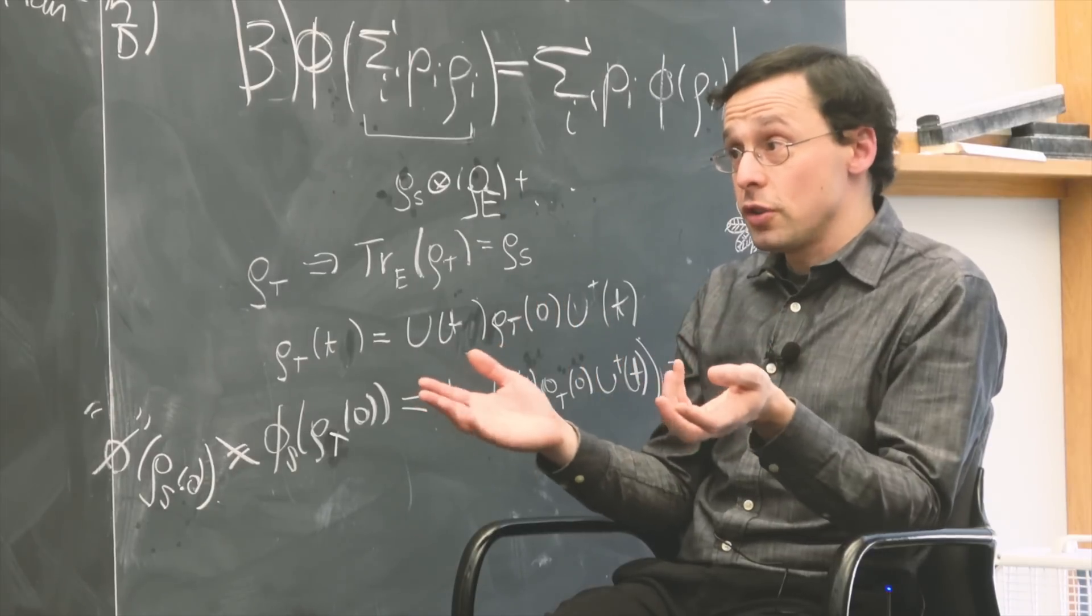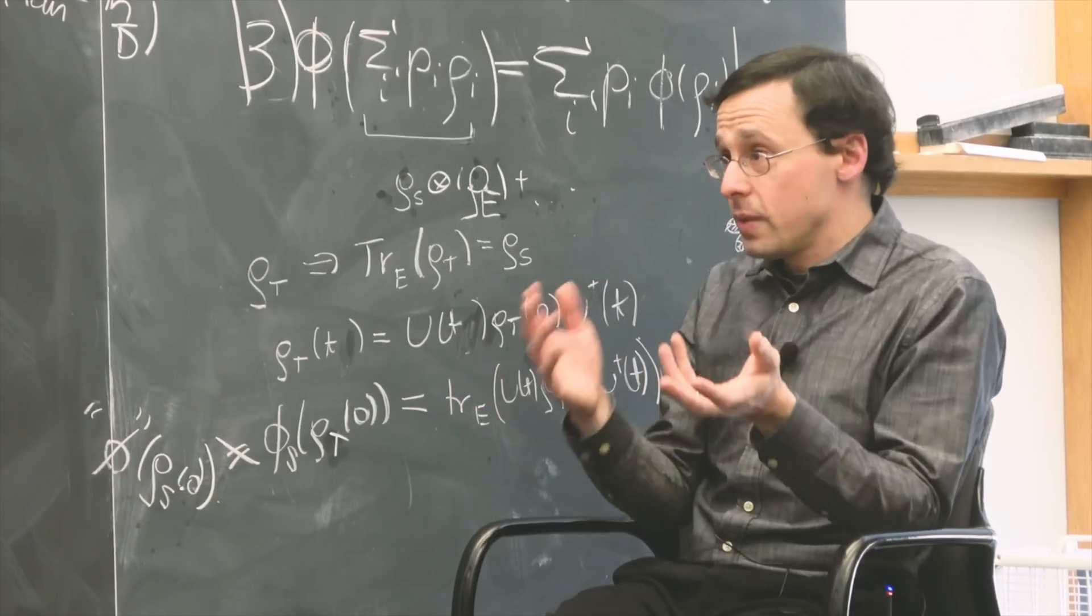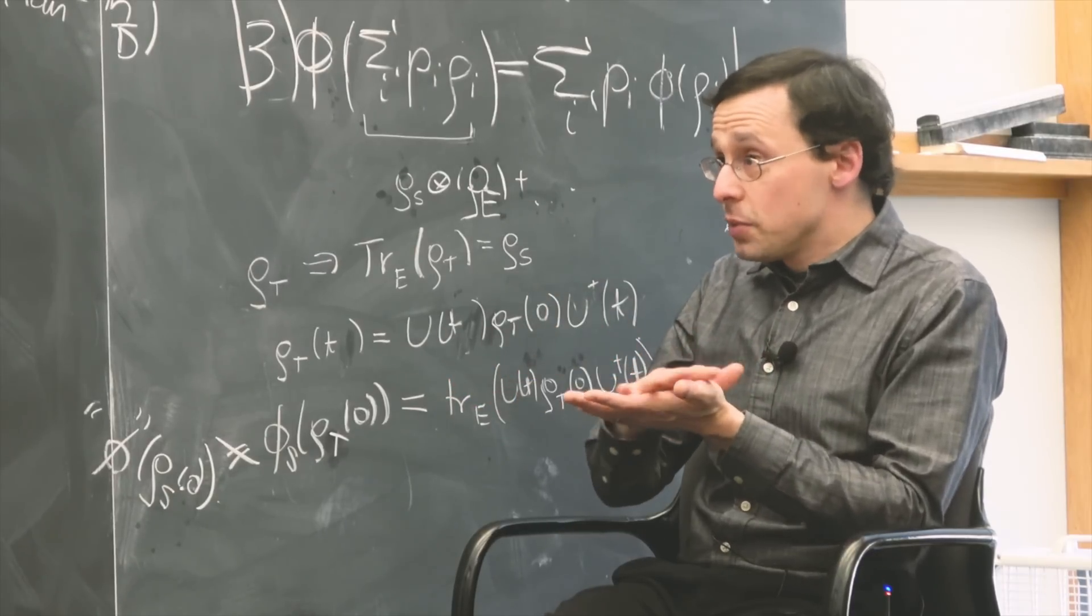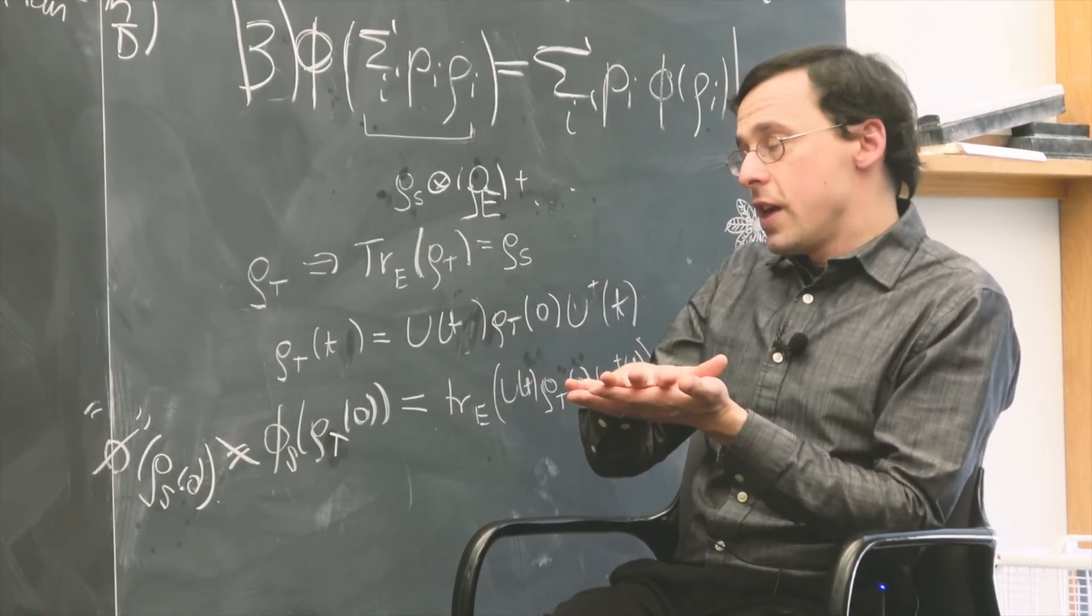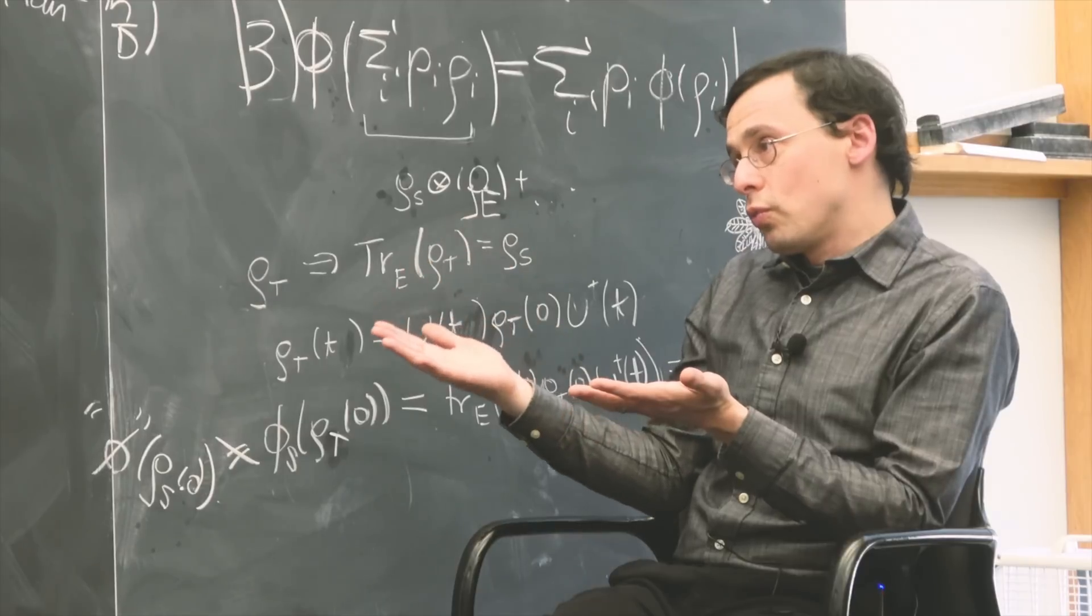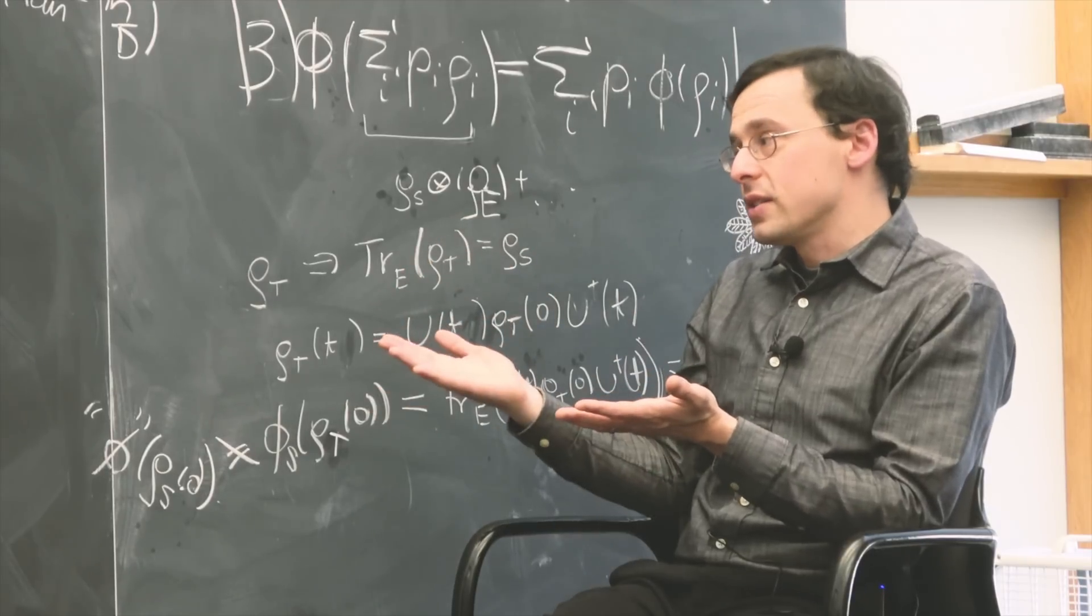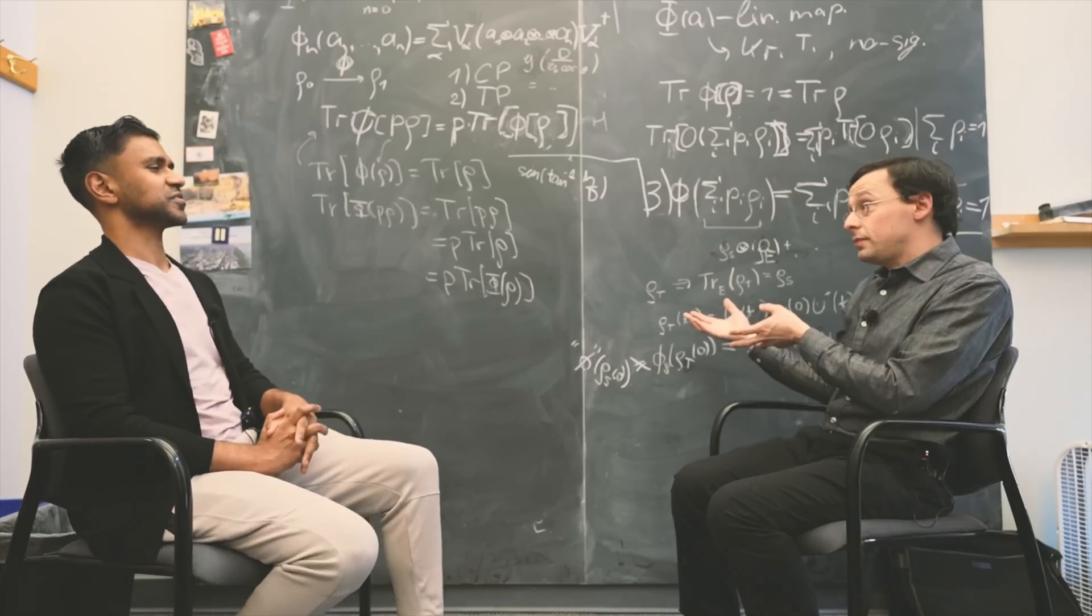could be a system of particles, could be a system of fields, whatever we're trying to model, and if it has indivisible stochastic laws, then through this mathematical representation, this correspondence, you get a Hilbert space picture. That's super interesting.